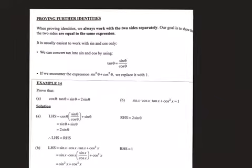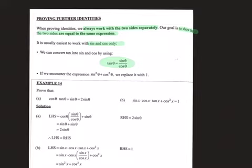These are your textbook examples — they are in the textbook just after we've worked with the reductions and negative angles, just after exercise five. When proving identities, we always work with the two sides separately. Our goal is to show that the two sides are equal to the same expression. It's usually easiest to work with sine and cos only, so tan can be split into sine over cos. Also don't forget you can use your squares identity and use a one.